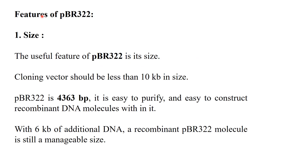The most important feature of pBR322 is its size. The size of a cloning vector should be less than 10 kb, and pBR322 is 4363 base pairs — 4.3 kilobase pairs. Because of this small size, it is easy to purify and easy to construct recombinant DNA molecules within it.